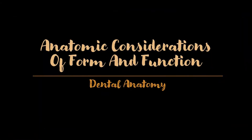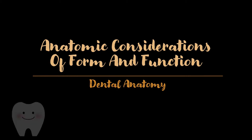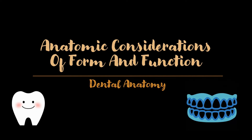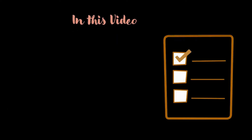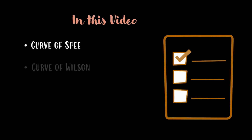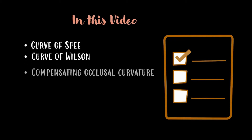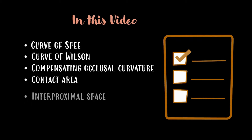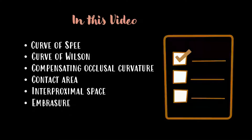Hello everyone and welcome to the Dentist Hub. Today's video is about the anatomic considerations of form and function in dental anatomy. We will be discussing the curve of Spee, curve of Wilson, compensating occlusal curvature or the sphere of Monson, contact area, interproximal space, and embrasure.